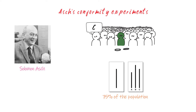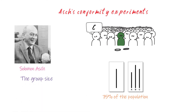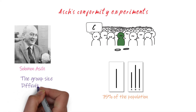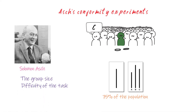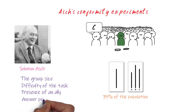So what are the factors that affect conformity? First, group size — conformity tends to increase when more people are present. Second, difficulty of the task — conformity increases when the task becomes more difficult, as people turn to others for information about how to respond. Third, presence of an ally — conformity decreases when there's an ally in the group. And finally, answering in private — conformity also tends to decrease when people are able to respond privately.